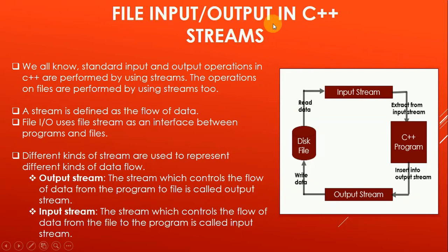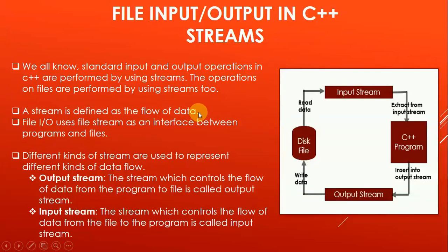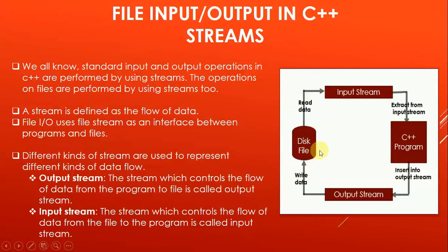Now let us understand file input/output in C++. Standard input and output operations in C++ are performed using streams, and the operations on files are also performed using streams. A stream is defined as the flow of data — just like a normal stream which is a flow of water. File input/output uses a file stream as an interface between programs and files. Different kinds of streams are used to represent different kinds of data flow. The data flow can be from a disk file to a C++ program, or from a C++ program to a disk file. There are two different types of streams: the output stream and the input stream.